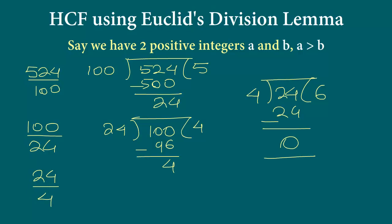Now the remainder is 0. Whenever the remainder is 0, the divisor is the required HCF. The divisor here is 4, and indeed when we used prime factorization earlier for 100 and 524, we also found that 4 was the HCF.